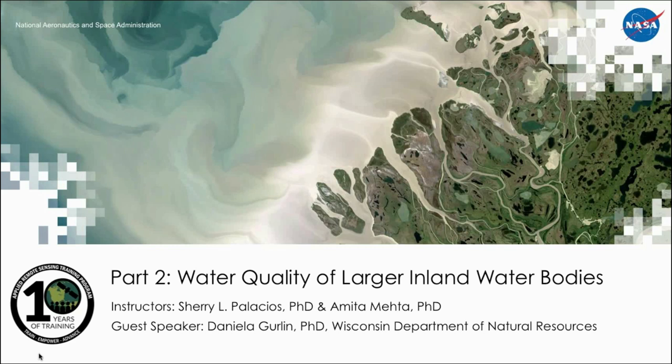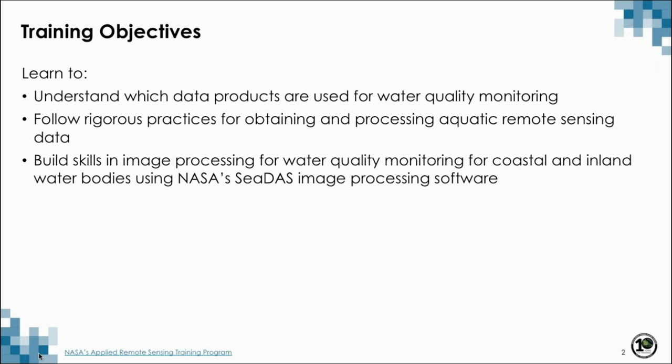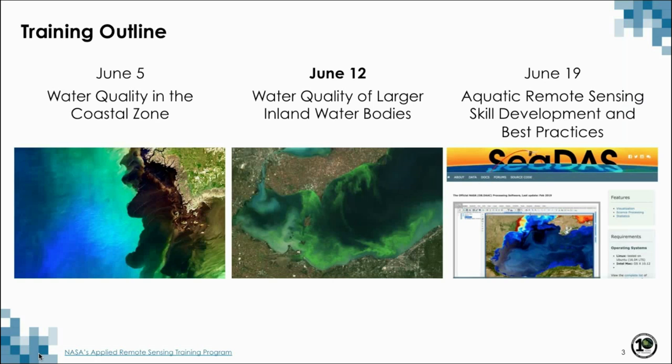We understand that we have a diverse audience of participants. We hope that each of you will come away from this series with some new knowledge and skill related to the remote sensing of aquatic systems and how it can complement a larger water quality monitoring program. The objectives of this training are to learn which data products are used for water quality monitoring, follow rigorous practices for obtaining and processing aquatic remote sensing data, and to build skills in image processing using NASA's CDAS image processing software. Last week we focused on coastal systems, and this week we are focusing on water quality of larger inland water bodies.